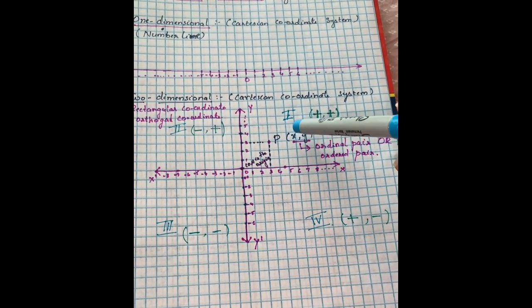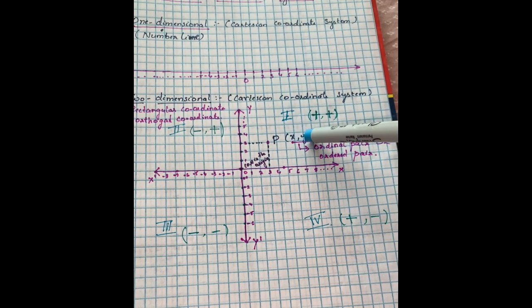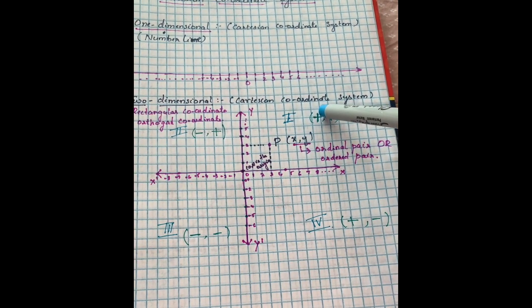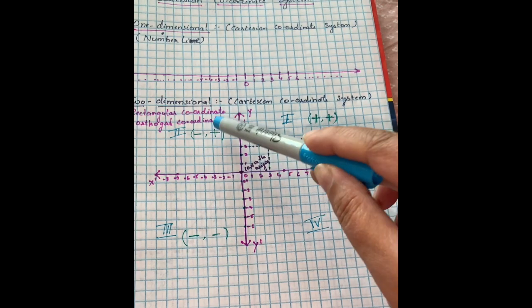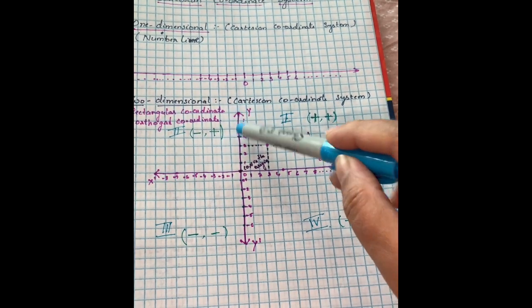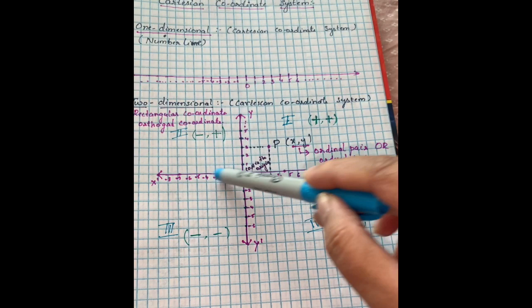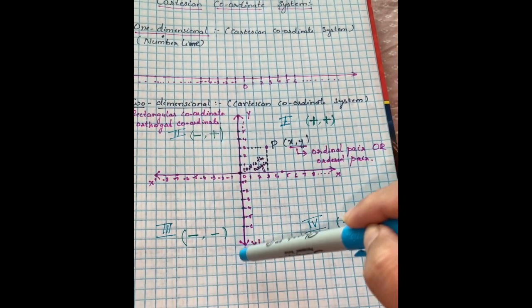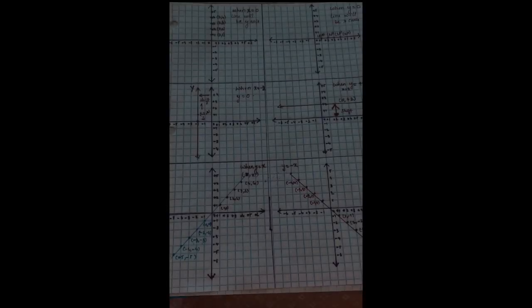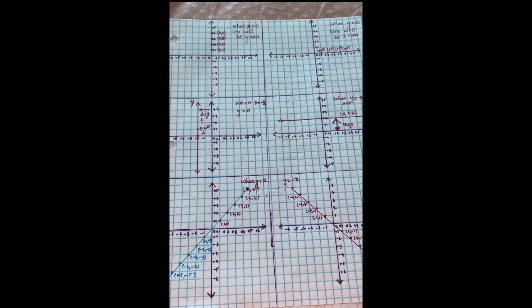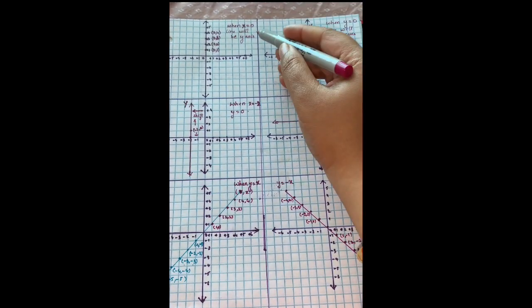Each point can be represented by x and y. In the first quadrant, both the x-axis and y-axis are positive. In the second quadrant, x is negative and y is positive. In the third quadrant, both x and y are negative. In the fourth quadrant, x is positive and y is negative.